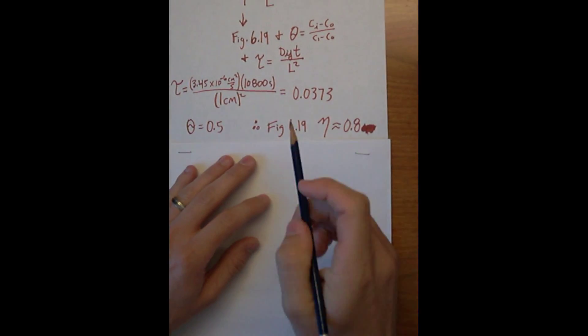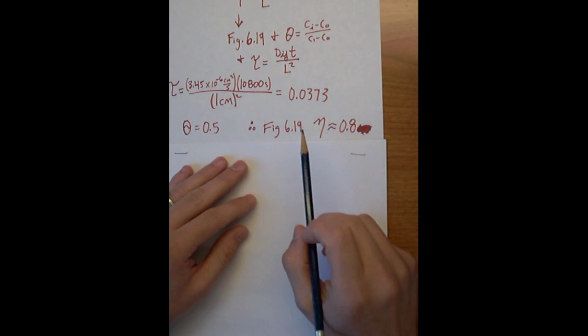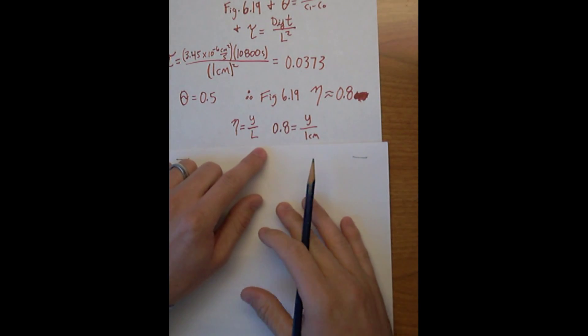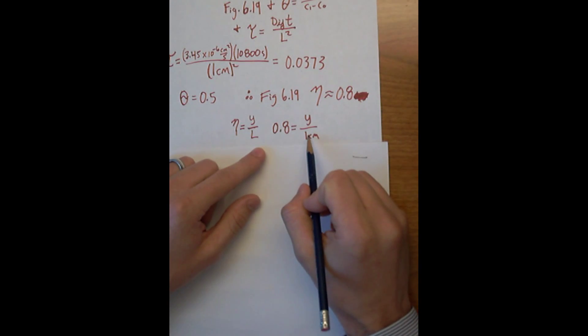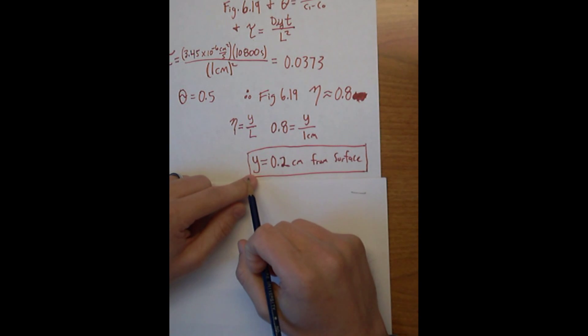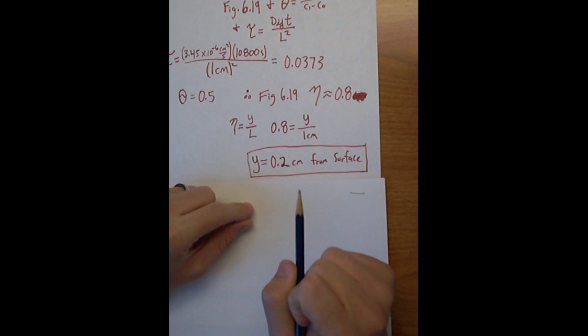So with the tau and the theta, we're able to find eta, and we figured it was roughly around 0.8. So eta equals Y over L, so we're able to solve for Y. Because our L is 1 centimeter and eta is 0.8, we figure out that the concentration at 50% of the original concentration of the bath at the time of three hours is 0.2 centimeters from the surface of the tissue. That's when it's actually reached that 50% mark, and that solves part C.